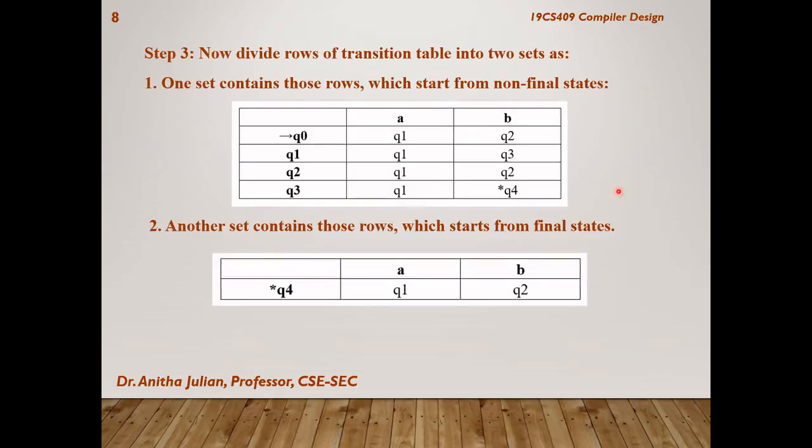Then we have to divide the transition table as non-final states and final state. We are having only one row in the final state table because there is only one final state here. In the previous problem, we had two final states. So, we have the remaining all rows in the non-final state table. Just by seeing the diagram, we have written the table.